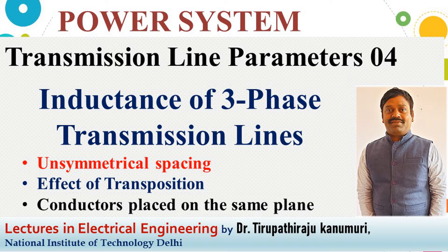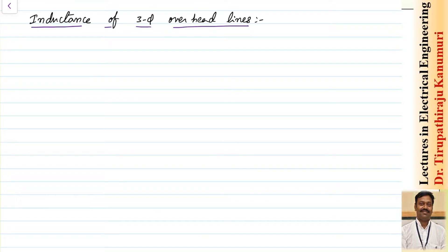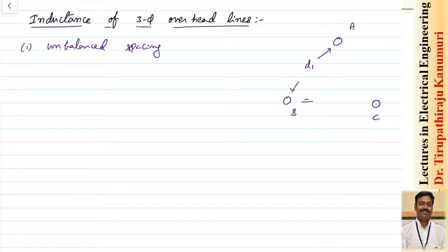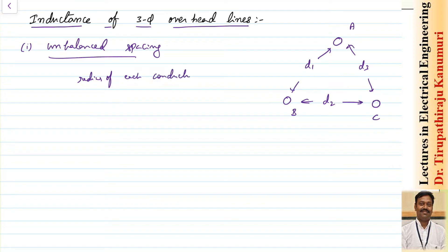Today we are going to discuss inductance of three-phase overhead lines. Let us take the unbalanced case first, so that all the balanced cases we can calculate easily. I am taking the case of unbalanced spacing — conductors A, B, and C are kept at the three sides of a triangle but the spacing is not the same. The distance between A and B is d1, between B and C is d2, and between A and C is d3. The radius of each conductor is r meters.